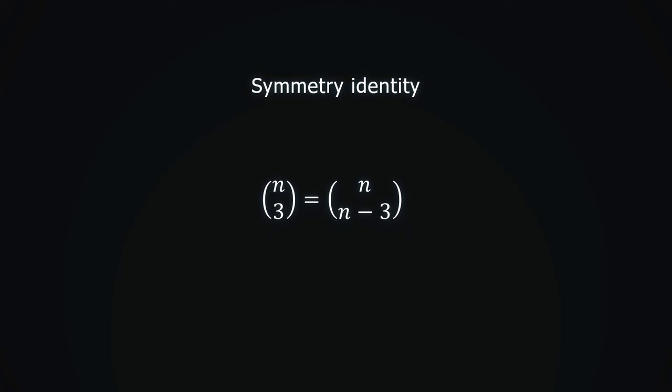Of course, there is nothing special about the number 3. The same argument applies to any number k. This identity essentially tells us we can choose and eliminate elements we don't want, instead of choosing those elements we do want.